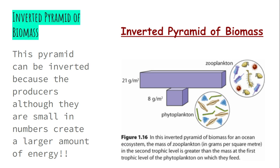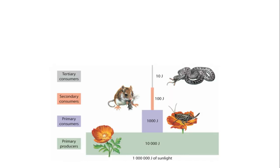You can also have an inverted pyramid of biomass. Although the producers are very, very small, there can be enough of them to create a large amount of energy at the next level. We are going to talk about both inverted pyramid ideas more in class tomorrow.